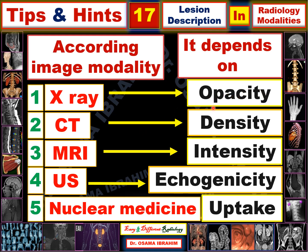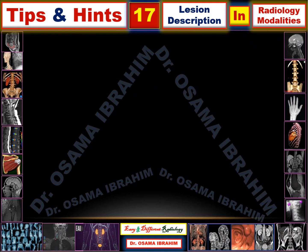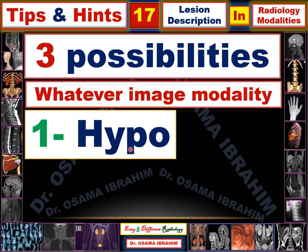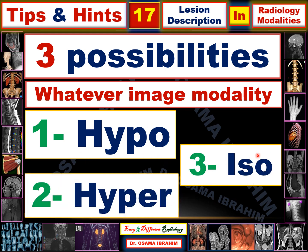According to these words, I can describe lesions by adding hyper, hypo, or iso as a prefix to give a proper radiological description. Whatever the imaging modality, lesions can be described as hypo, hyper, or iso.